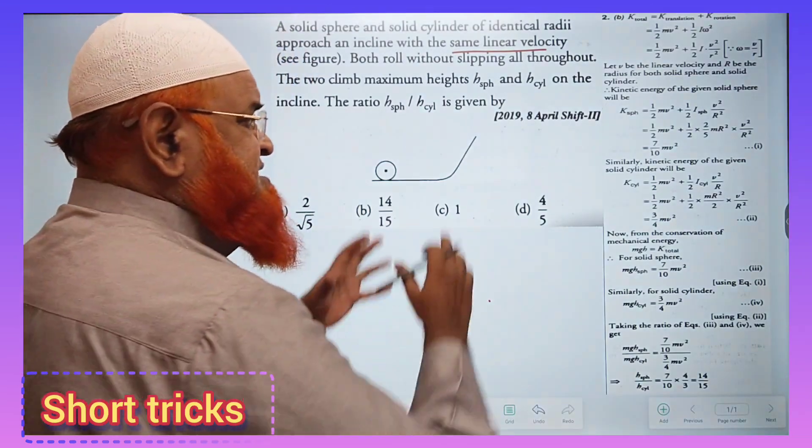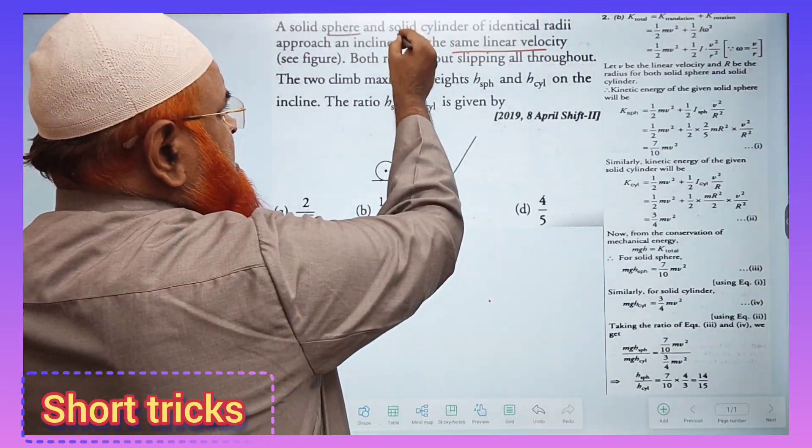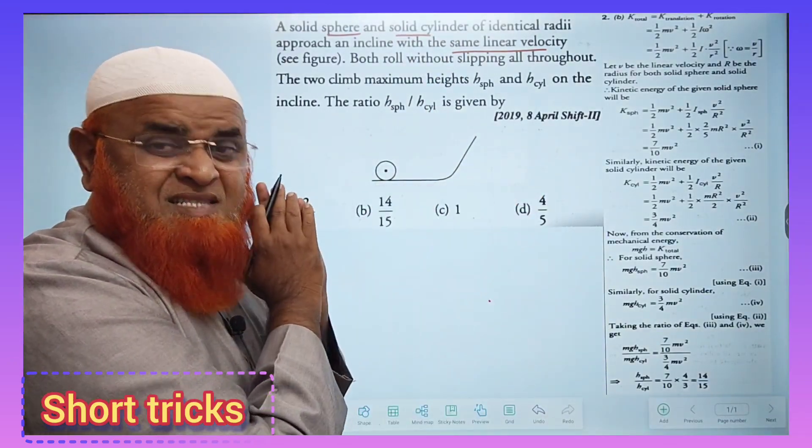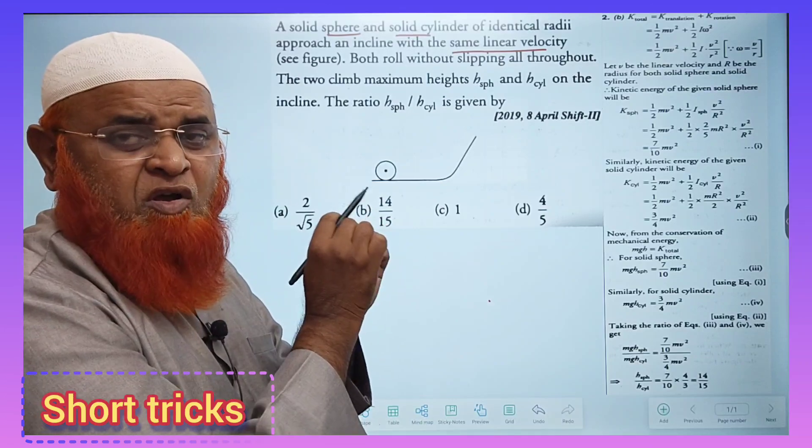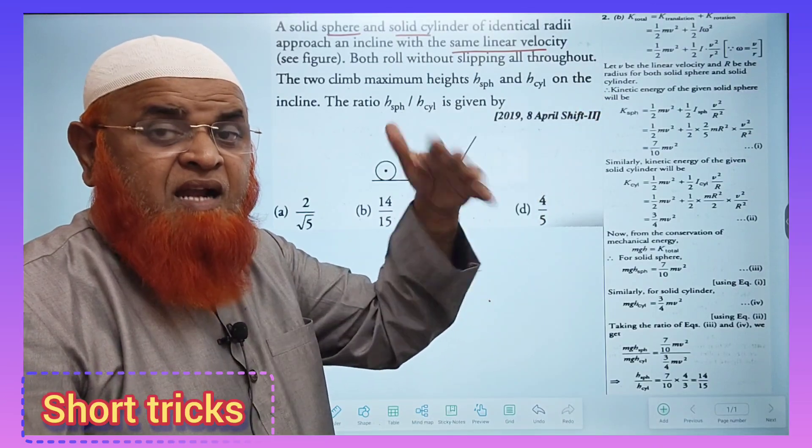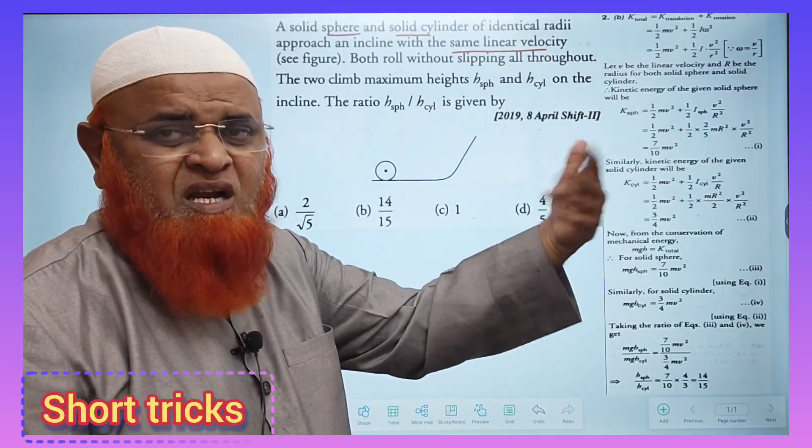What is this problem? There are two objects - one is a sphere, another is a solid cylinder. Both have been pushed with identical velocities. They are reaching maximum heights, and those heights may be different because the bodies are different.